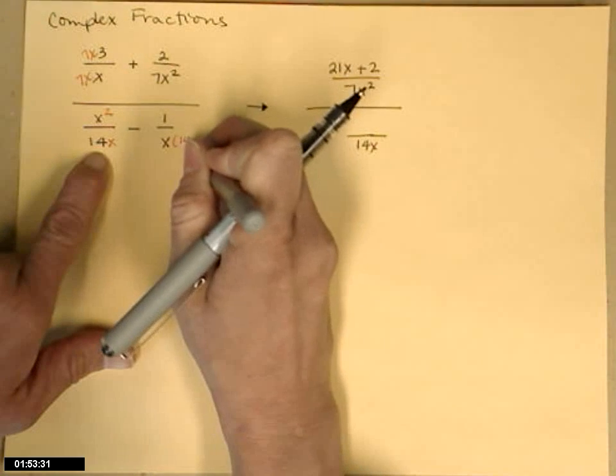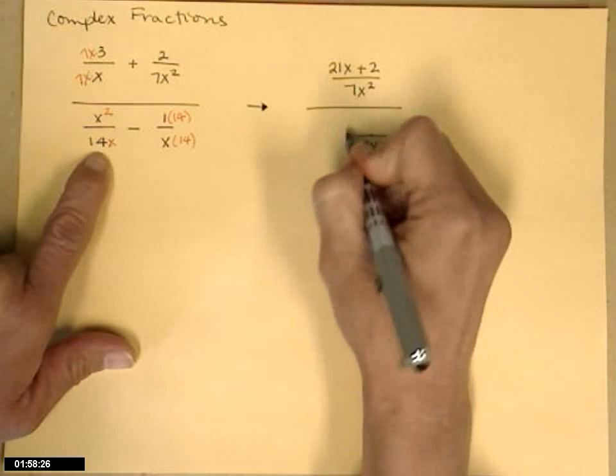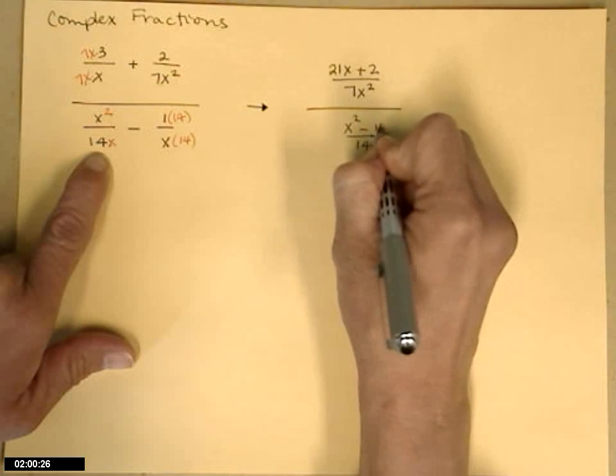Second fraction, top and bottom multiplies by 14. So I'll get x squared minus 14 for the denominator.